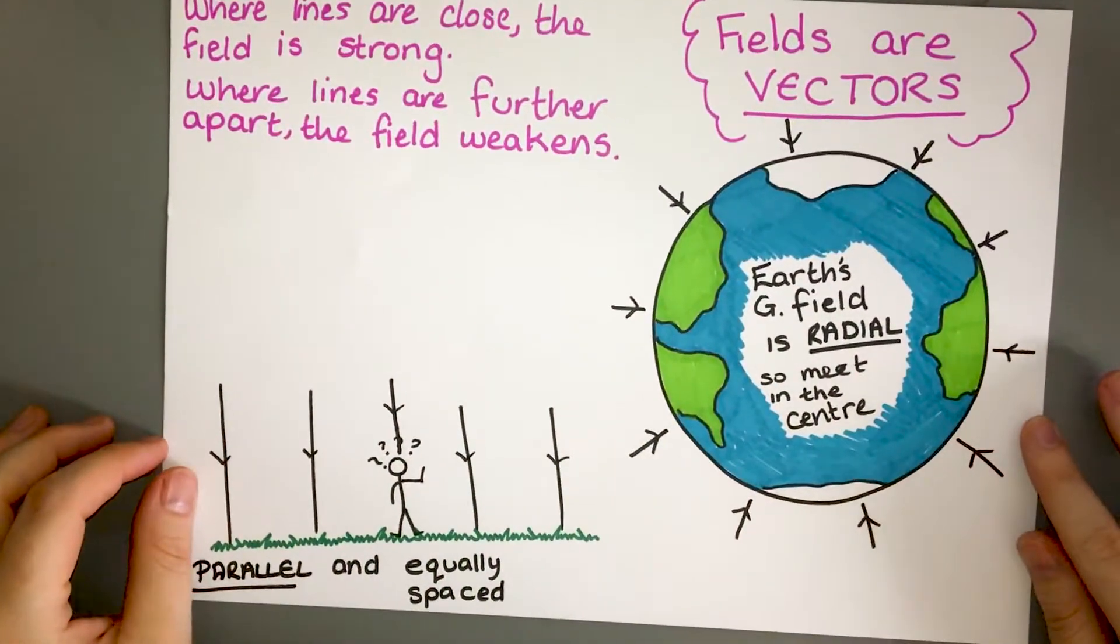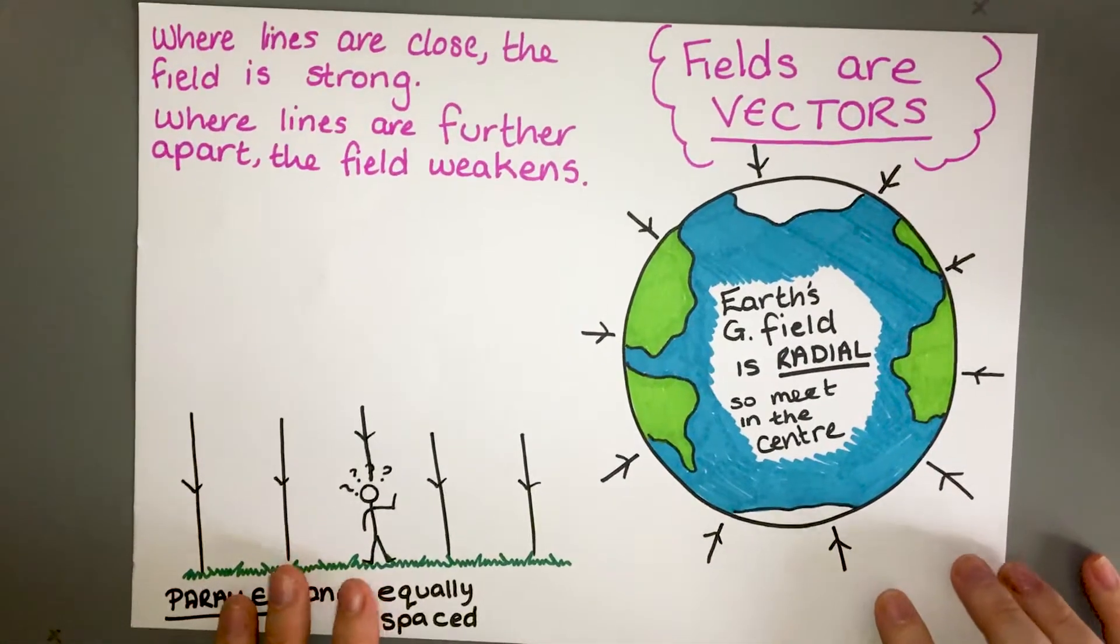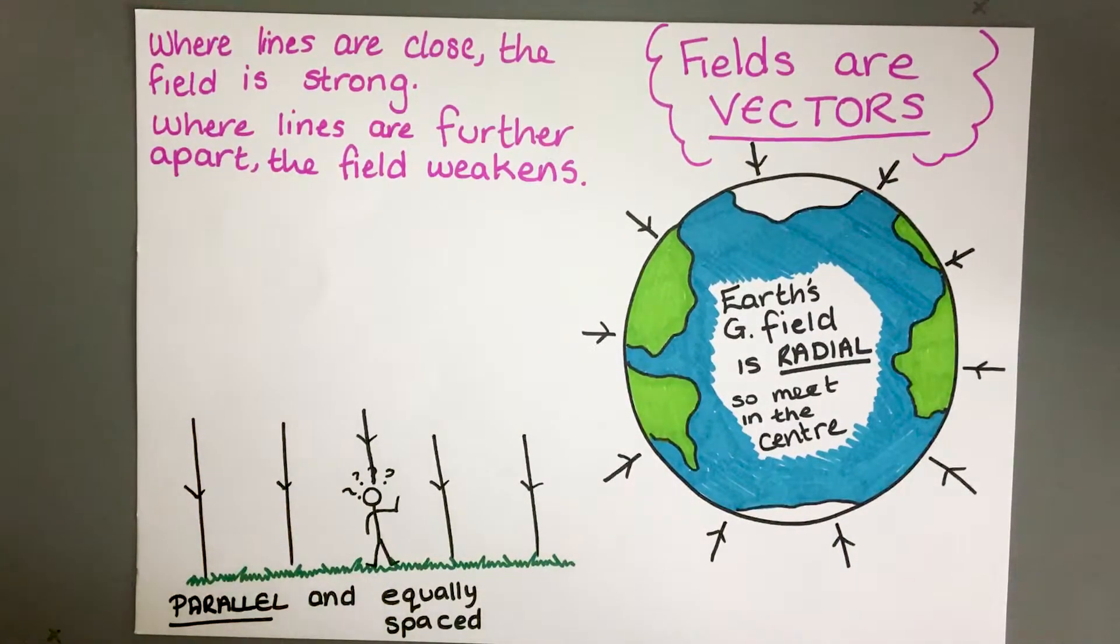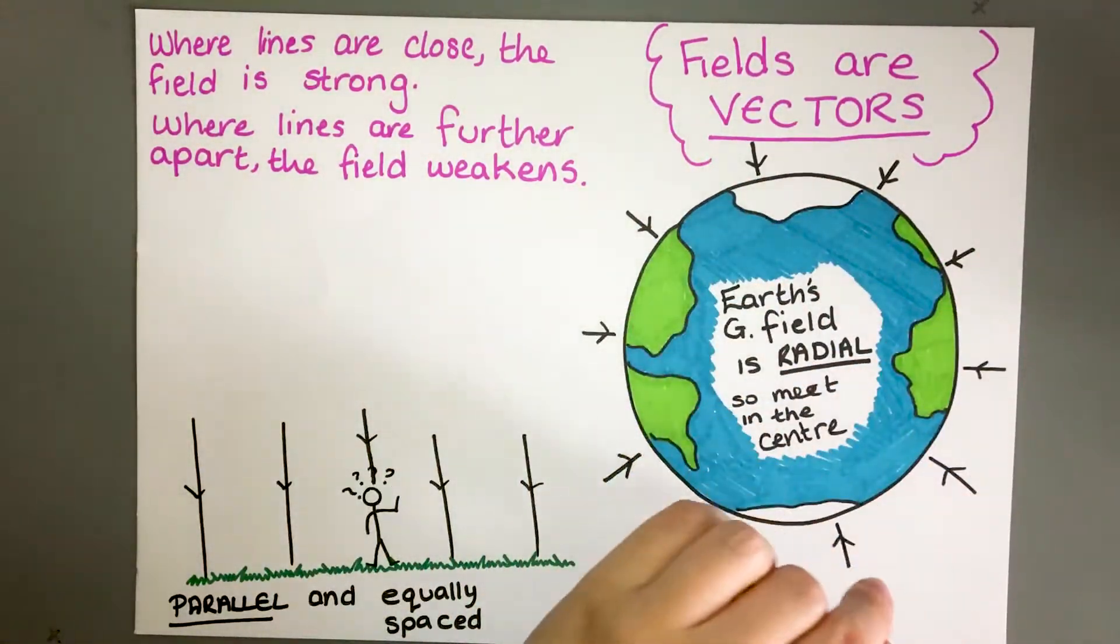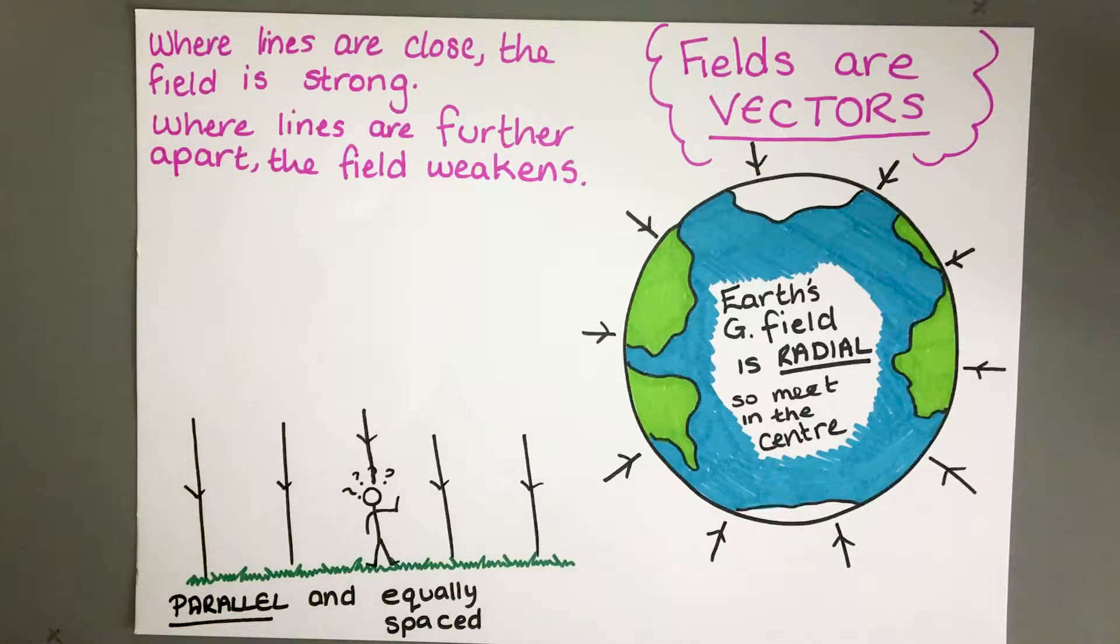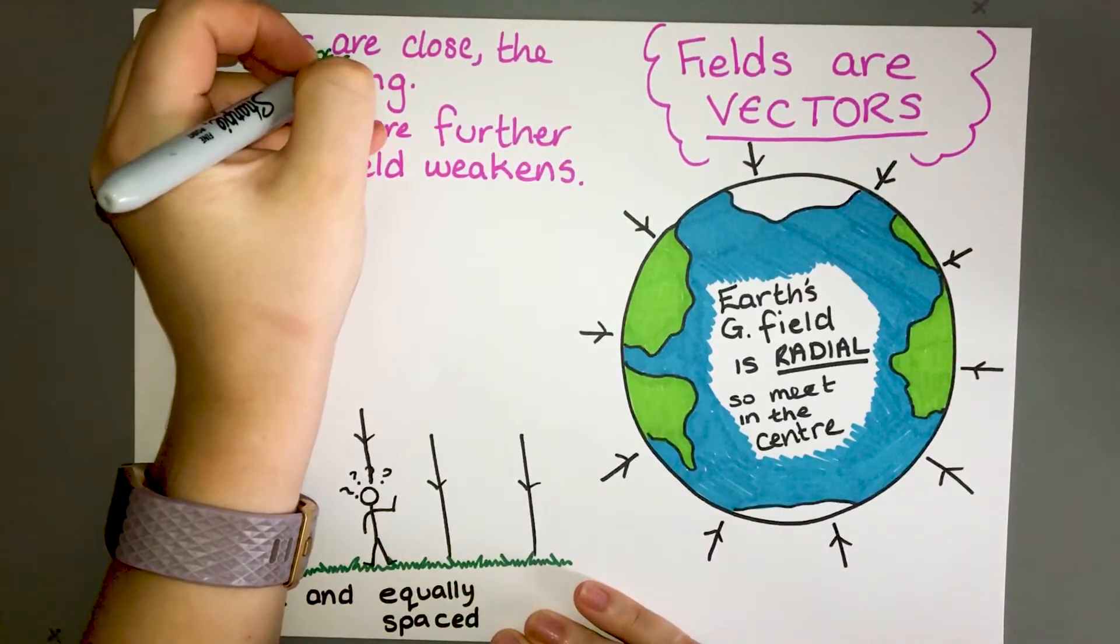In terms of gravitational fields they are vectors. A vector has a magnitude, so how big it is, and a direction and that is really important. We have to identify the direction in which they're moving by representing it with arrows. These lines are lines of force.